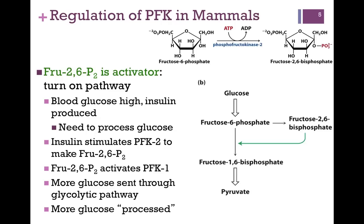In mammals, the regulation is a little different. The main regulator is fructose 2,6-bisphosphate, and it is an activator of the pathway. At the top of the screen, we have the reaction that produces fructose 2,6-bisphosphate: we start with fructose 6-phosphate, transfer a phosphoryl group from ATP, and here's our 2,6 product. That reaction is catalyzed by phosphofructokinase 2, or PFK2. Note the distinction: PFK1 makes fructose 1,6-bisphosphate, and PFK2 makes 2,6-bisphosphate — that's the easiest way to remember the distinction between them.